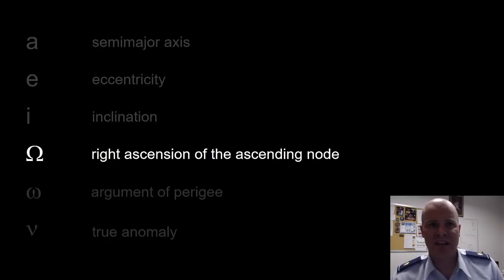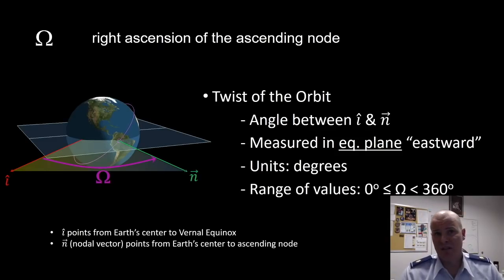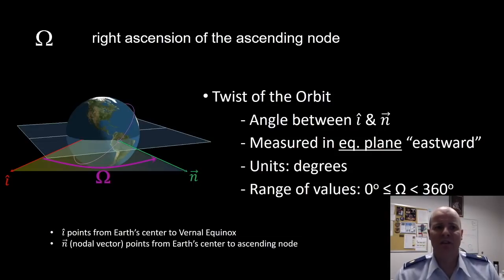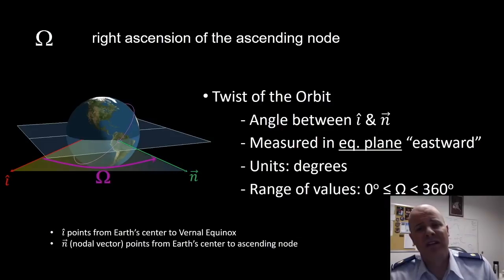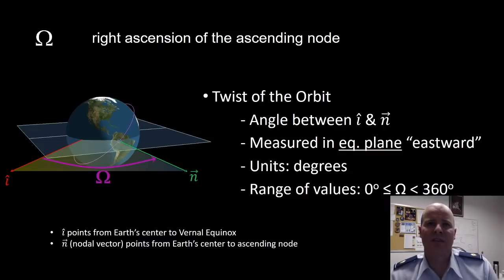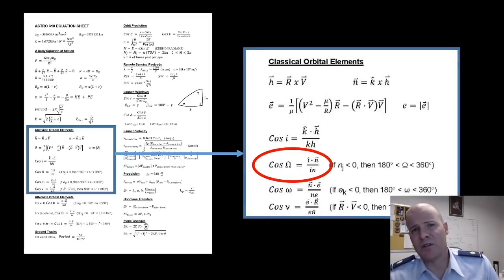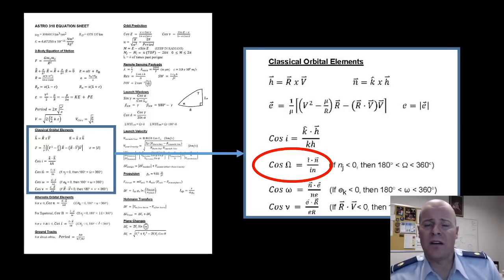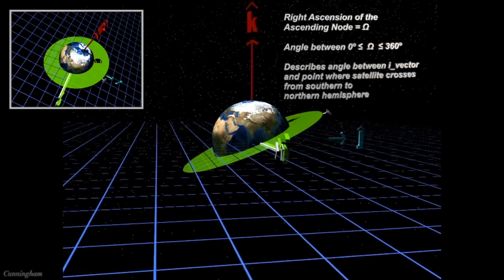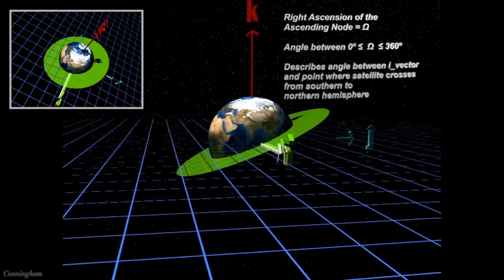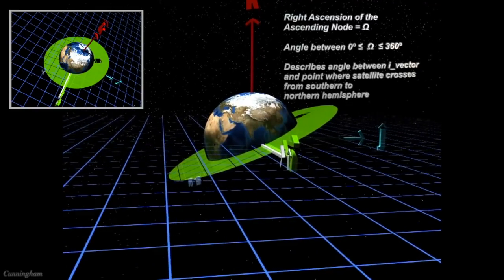Next, we have the right ascension of the ascending node, or capital omega. This defines the twist of our orbit. This is the angle between I and N. I points from the Earth's center to the vernal equinox, and N is our nodal vector, which points from the Earth's center to the ascending node. This is measured in the equatorial plane eastward. Its units are given in degrees, and it can have a range of values between zero and 360. On the equation sheet, its definition is given as the cosine of the RAAN angle equals the dot product of I and N over the magnitude of I and N. This is what it looks like for our right ascension of the ascending node angle to change.